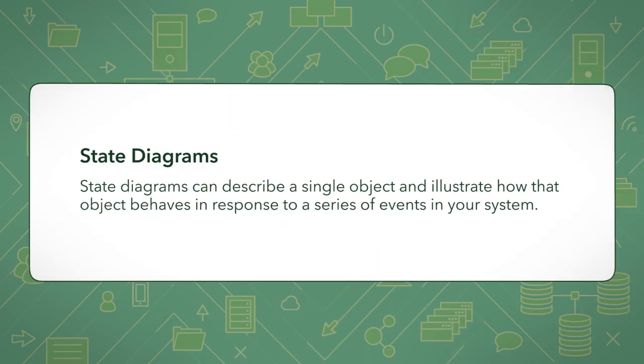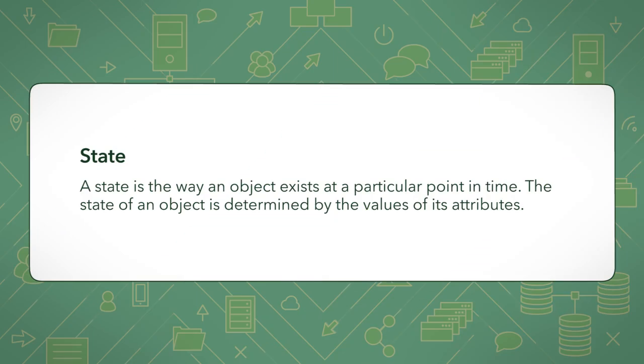State diagrams can describe a single object and illustrate how that object behaves in response to a series of events in your system. A state diagram illustrates object behavior by depicting the changing states of an object. These states change in response to different events. A state is the way an object exists at a particular point in time. The state of an object is determined by the values of its attributes.